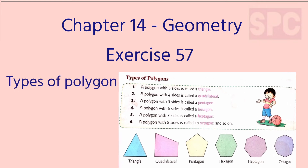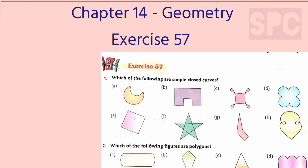There are some more types of polygons. After quadrilateral, there is a pentagon — a polygon with five sides and five vertices. The next kind is a hexagon, which has six sides and six vertices. A polygon with seven sides is called a heptagon — it has seven sides and seven vertices. A polygon with eight sides is called an octagon — it has eight sides and eight vertices.